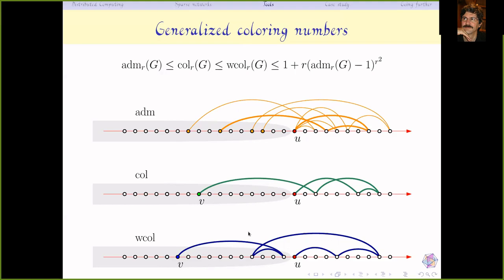When r=1, you can only do one step, which reduces to the standard back-degree notion. So the weak coloring number wcol_1 is simply the standard coloring number we are used to.